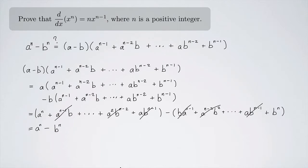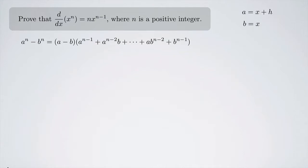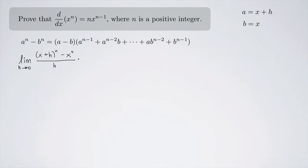Now we can actually do the proof. We just showed that a to the n minus b to the n equals that factored form, and remember a equals x plus h and b equals x. So let's write the limit definition of the derivative again: the limit as h approaches 0 of x plus h to the n minus x to the n, all over h.